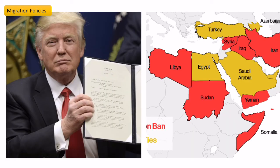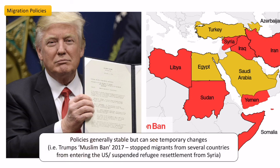Immigration policy has generally stayed the same and is often very positive for the USA — they take in more people than are leaving — but there can be temporary changes. Back in 2017 Trump introduced what was nicknamed the Muslim ban, stopping people from several countries from entering the US and suspending refugee resettlement from Syria. It's good to know that different administrations — Trump, Biden, Obama — would have had different policies that slightly changed the limits on who can legally come in and out.